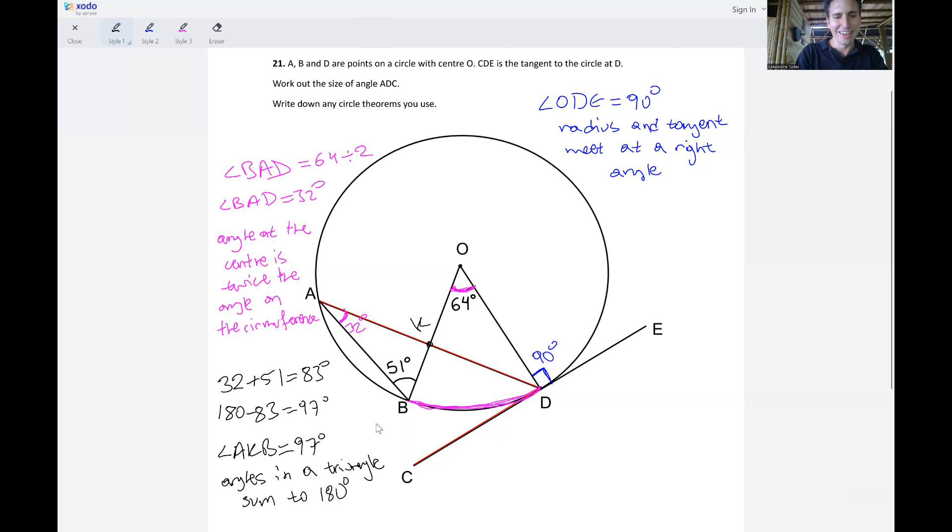Okay so now we know that angle right there is 97. So AKB is 97. I'm going to indicate that with this arrow. Now we've finished working on this triangle, we can move on to the triangle on the right.